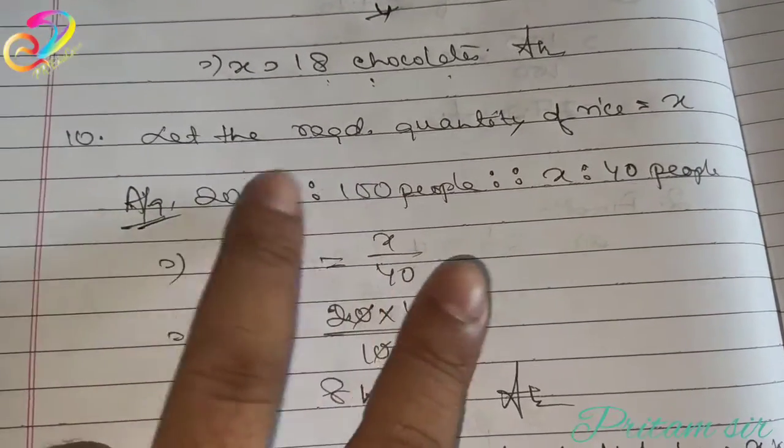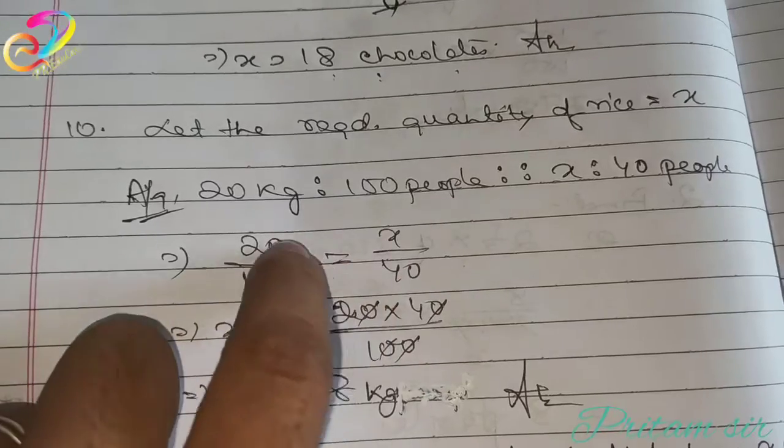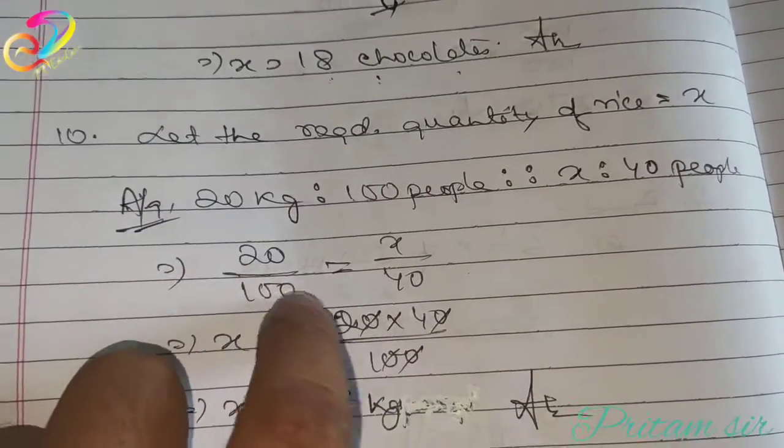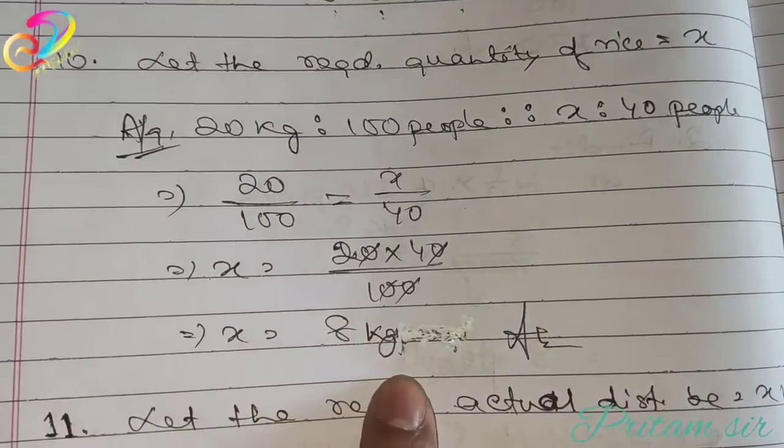So, 20 kg by 100, 20 by 100 equal to x by 40. Then cross multiplication, 20 into 40 cross multiplication, 100 into x cross multiplication. Then we have x equal to 8 kg.